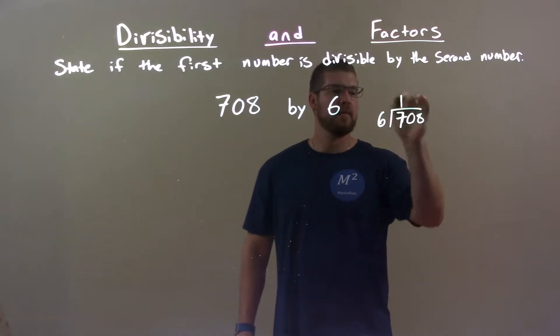6 goes into 7 one time. 1 times 6 is 6. Subtract: 7 minus 6 is 1.